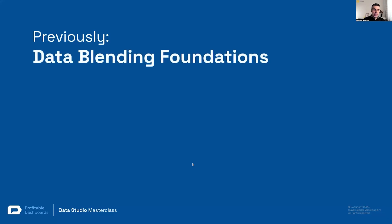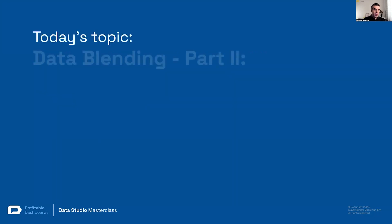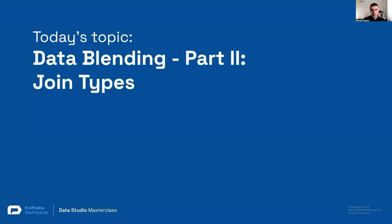Last session, we talked about data blending's foundations — how it works behind the scenes. We saw it on a slide and then in Data Studio as well. We also talked about the first type of join: left outer join. But we understood that there are more joins available in Data Studio, and today we are going to talk about join types — the rest of the joins available in Data Studio.